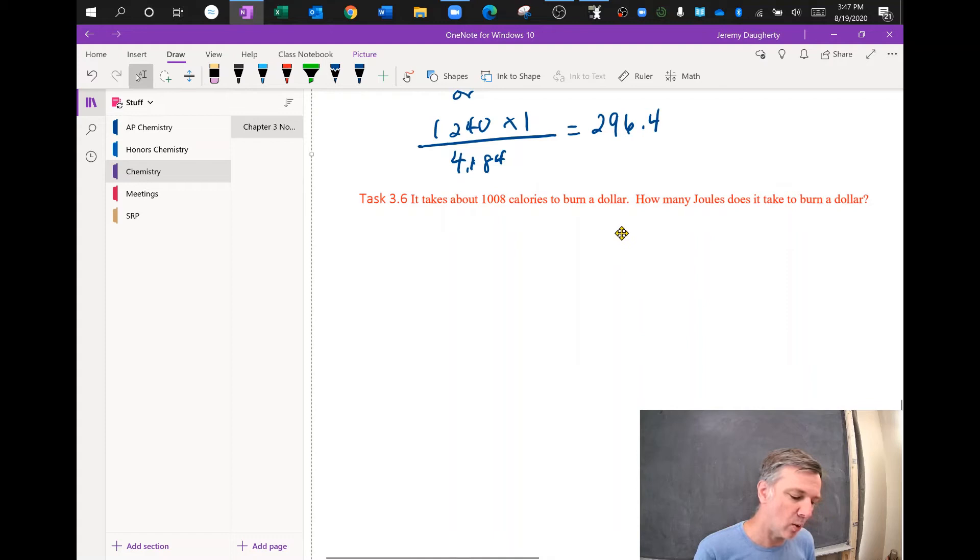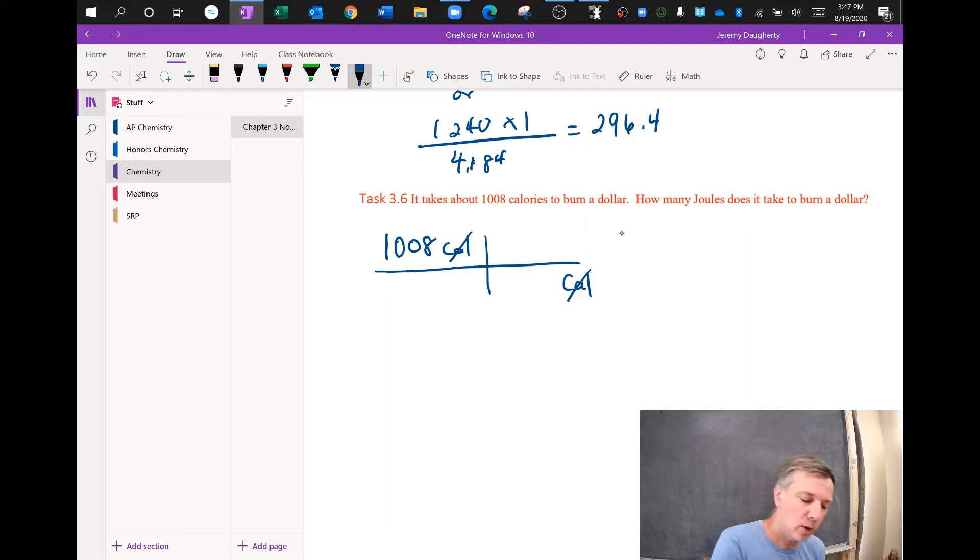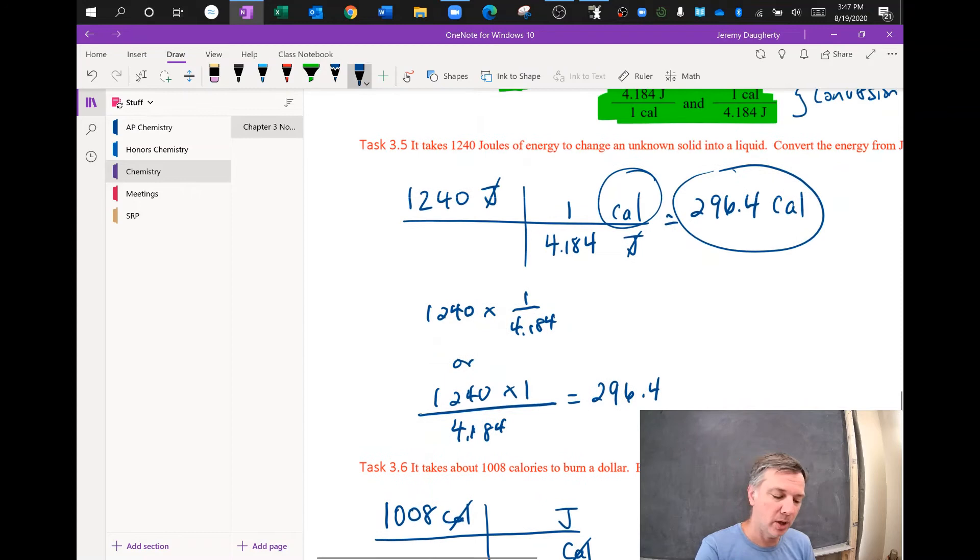Now, this time, it says it takes about 1,008 calories to burn a dollar. True statement. How many joules does it take to burn a dollar? So we've got 1,008 calories. I'm going to set up a T-chart because I need to do a unit conversion. I want to change from calories to joules. So calories is on top. I want to get rid of calories. I don't want to end with calories. So I'm going to put calories on bottom. Why? Because now they cancel out. They're opposite from each other.